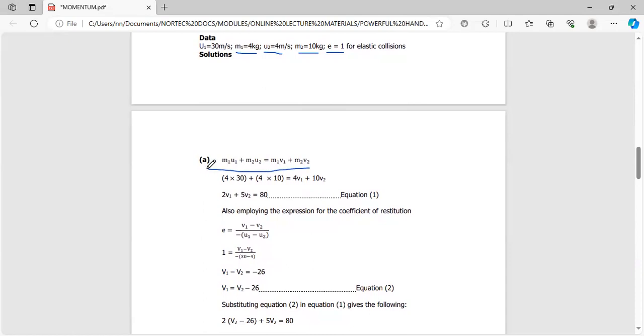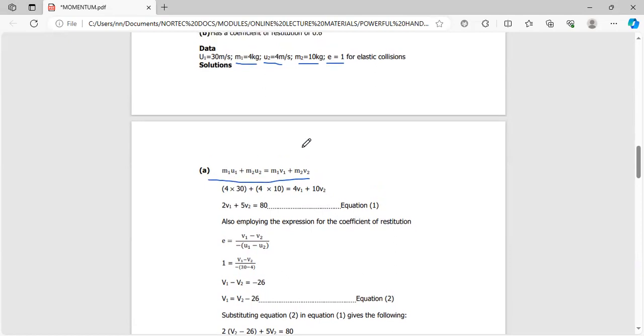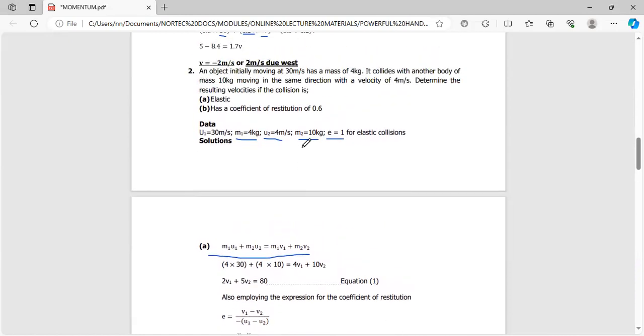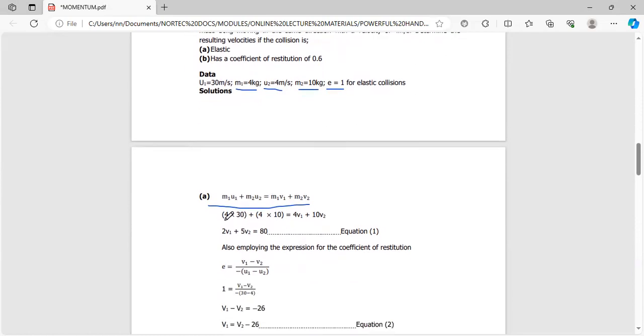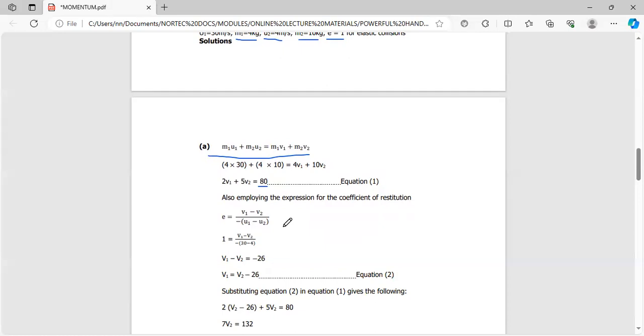Substituting in the momentum equation: M1U1 plus M2U2 equals M1V1 plus M2V2. So 4 times 30 plus 10 times 4 equals 4V1 plus 10V2. When we simplify, it ends up being 2V1 plus 5V2. The numbers are normally bigger, but dividing through by 2 gives us equation 1. So 2V1 plus 5V2 equals 80—that's our first equation.